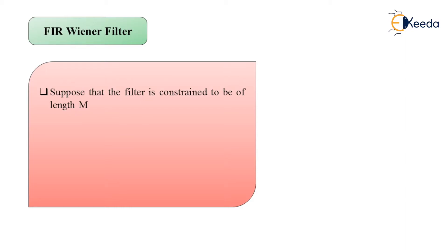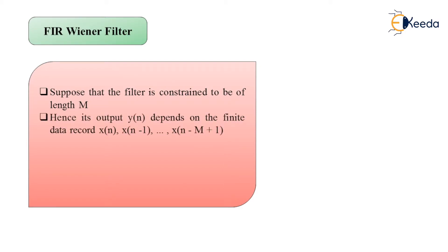The corresponding output y(n) depends on the finite data record x(n), x(n−1), and so on up to x(n−M+1). We represent the output by the expression: y(n) = summation over k from 0 to M−1 of h(k) multiplied by x(n−k).